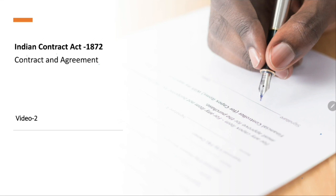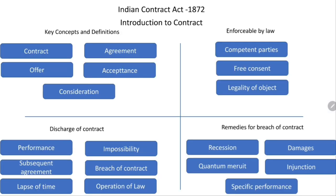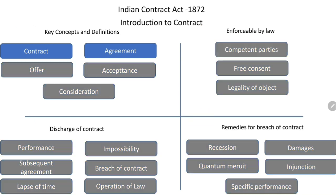Welcome back. We are discussing Indian Contract Act 1872. This is the second video and we are going to discuss contract and agreement. In the first video we discussed there are four pillars: key concepts and definitions, enforceable by law, discharge of contract, and remedies for breach of contract. In this video we are going to discuss key terms: contract and agreement.